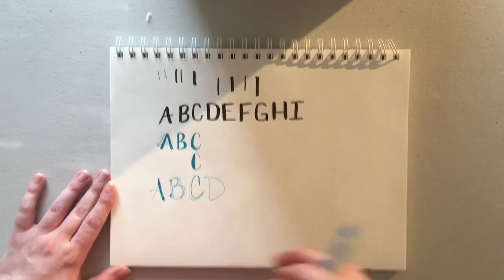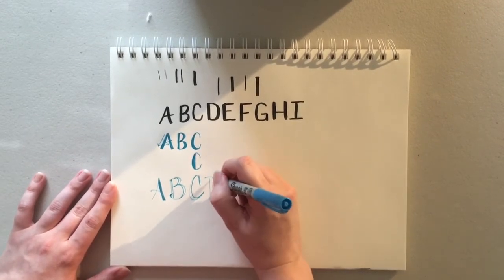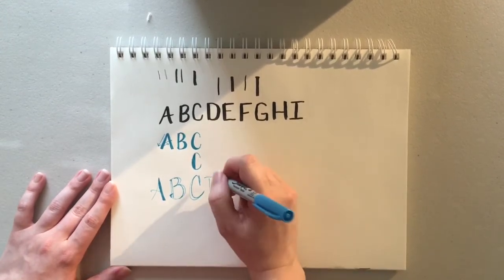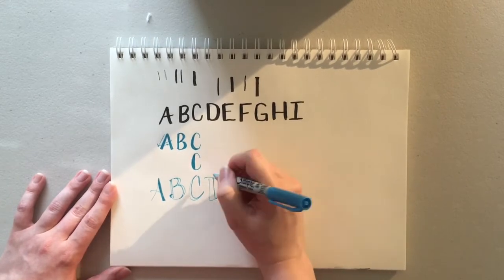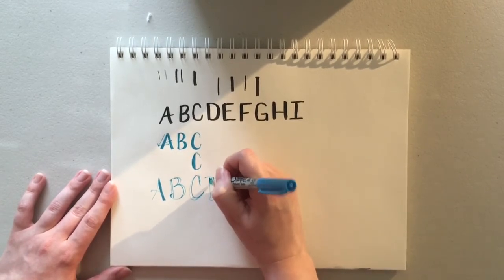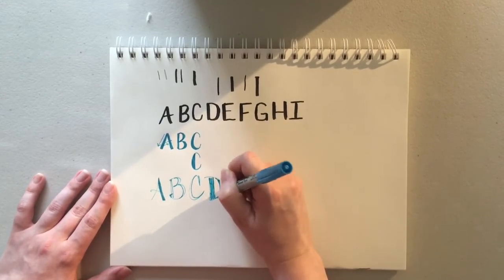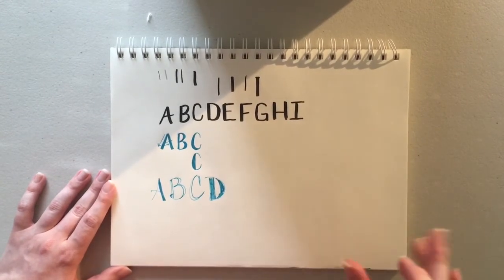And you can change the width of these. So maybe I want a really big downstroke here on either side. So when I color it in, I color it in. It's a much thicker, more bold letter.